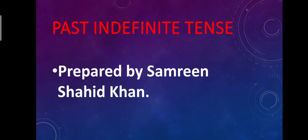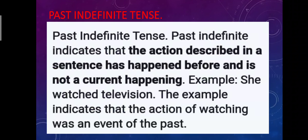Our today's topic is Past Indefinite Tense. Now let's dive into the topic. Past Indefinite Tense indicates that the action described in a sentence has happened before and is not a current happening. For example, 'She watched television.' This example indicates that the action of watching was an event of the past.